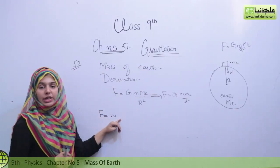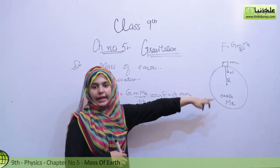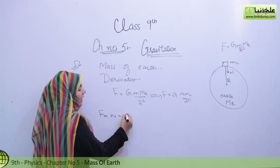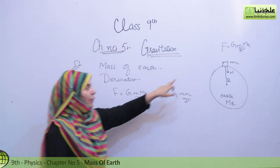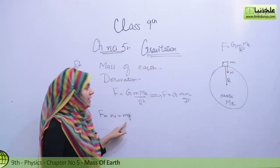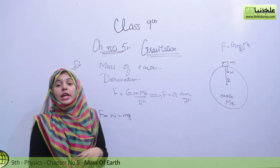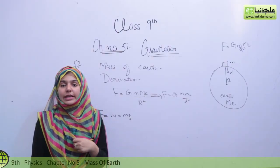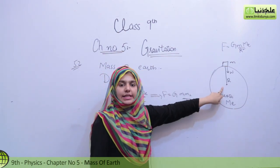So F is equal to W, because the weight is acting downward. The force equals W, and W equals Mg. Here M is the mass of the body, and g is the gravitational acceleration — the acceleration Earth provides to attract every body toward itself.